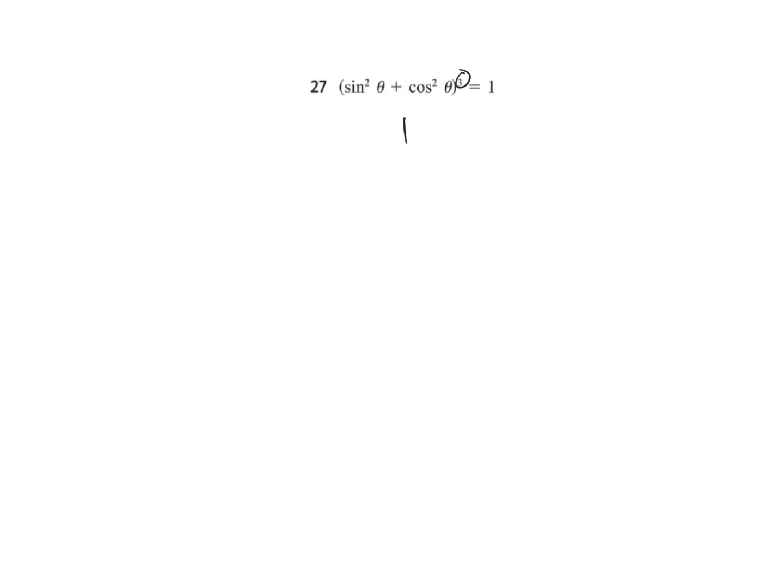Very crazy identities. Now we have a cube. Cosines — sine squared plus cosine squared is 1. 1 cubed is 1. Done. Not really sure what they were thinking on that one.